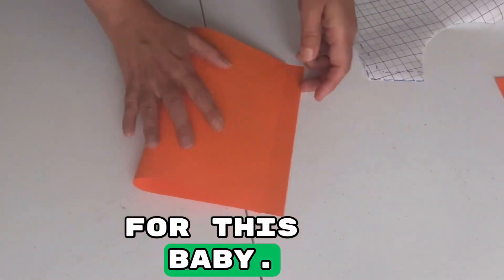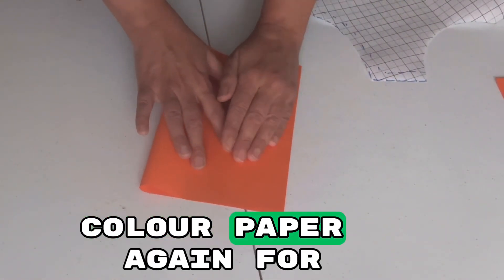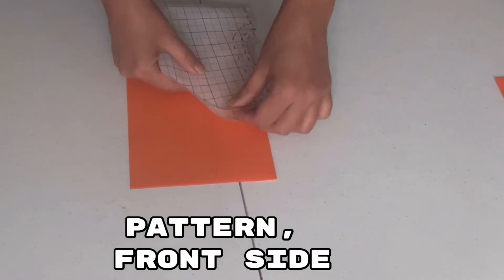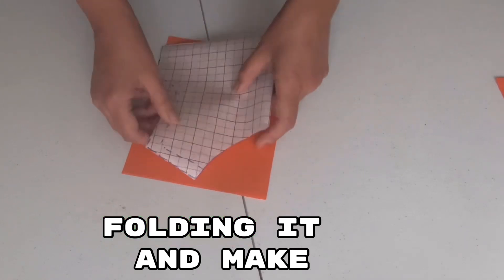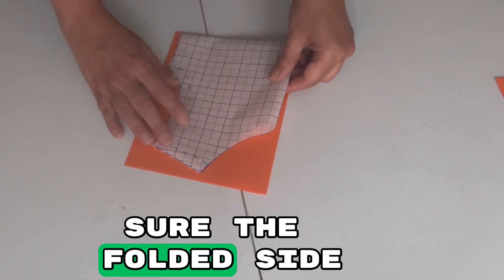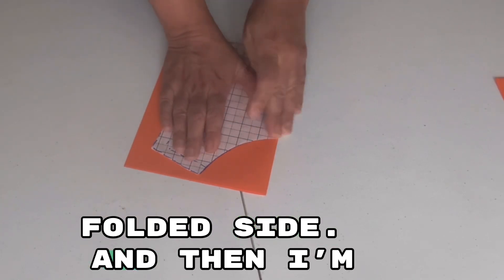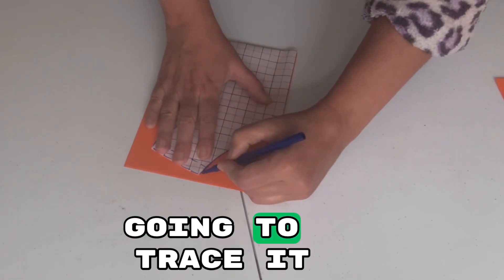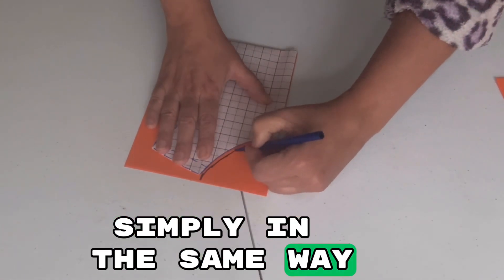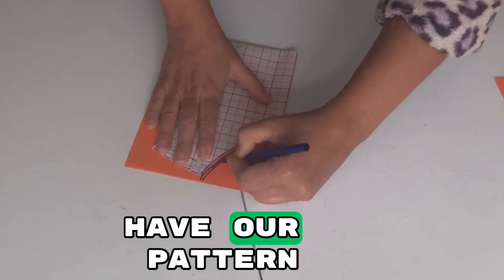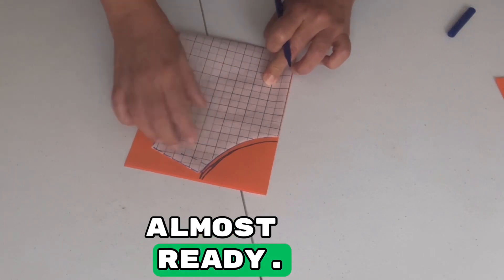Now I'm using this colored paper again for cutting the front pattern, the front side of the dress. I'm folding it and making sure the folded side is matching with the folded side. Then I'm going to trace it simply in the same way as I did for the back side, and then we have our pattern almost ready.